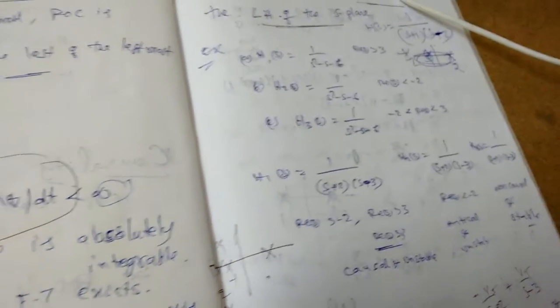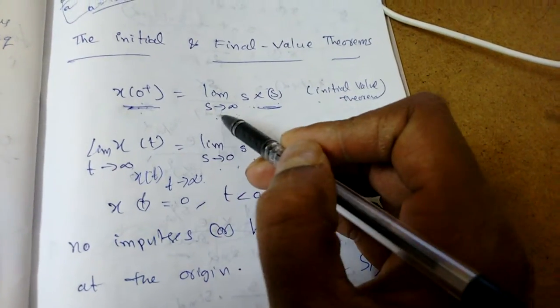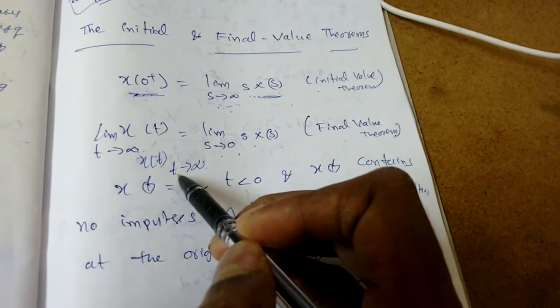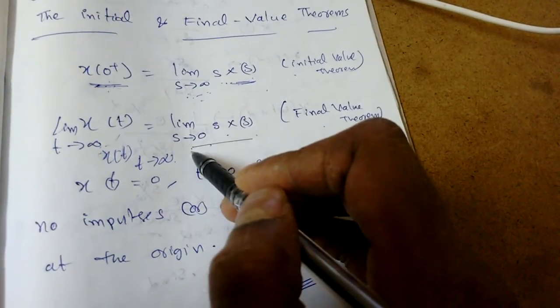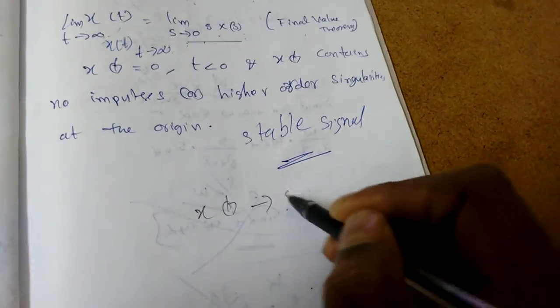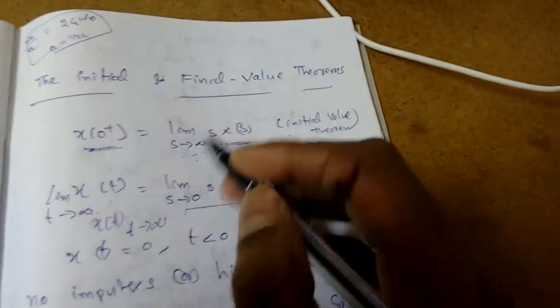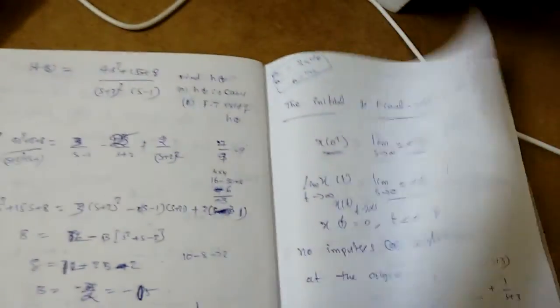Next are the initial value and final value theorems. The initial value of a signal is: x(0+) = limit as s tends to infinity of s·X(s). The final value theorem states that the final value is: limit as s tends to 0 of s·X(s), provided that x(t) is a stable signal — that is, it must be absolutely integrable — otherwise we cannot find the initial and final values.